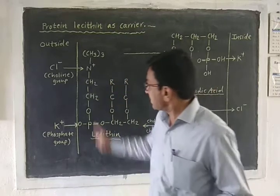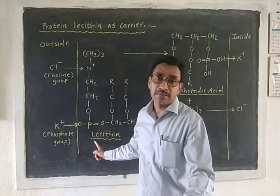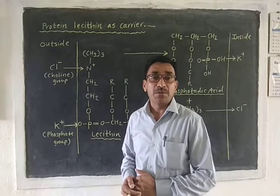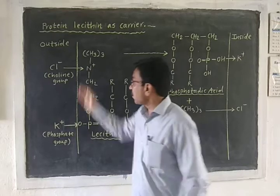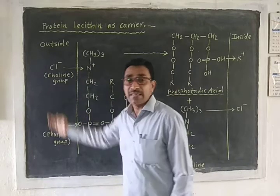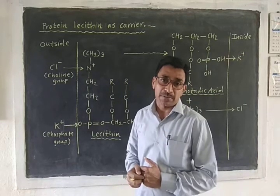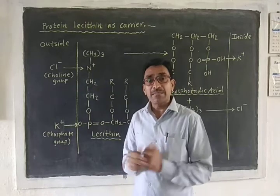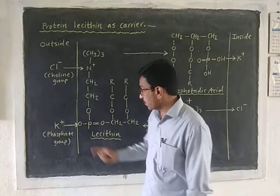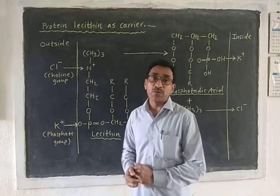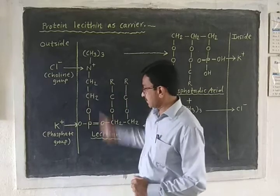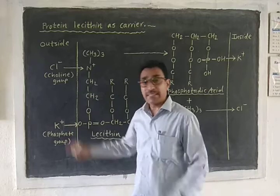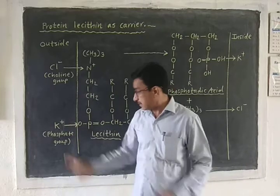During the synthesis of lecithin, it picks up ions from the outer surface of the cell. Lecithin has two groups: the phosphate group and the choline group. The phosphate group acts as a binding site for cations.